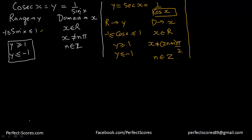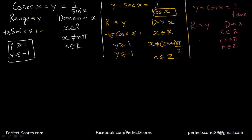We are left with cotangent of x. Let y equal cotangent of x, which equals 1 over tangent of x. x can take any real number. However, we do not want tangent of x to be 0, and tan 0, tan 180, tan 360 are all 0, which means x cannot be a multiple of π — that is, x ≠ nπ where n is an integer. For the range, since tangent of x can take any real value, cotangent can also take any real number.